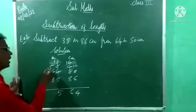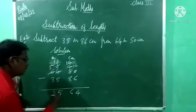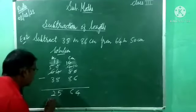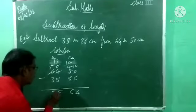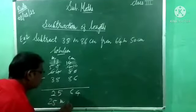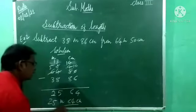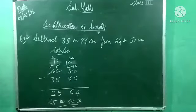5. Now 5 minus 3, how much? 2. 5 minus 3, 2. So 25 meter 64 centimeter. So understood these two examples? So note down this second example also.